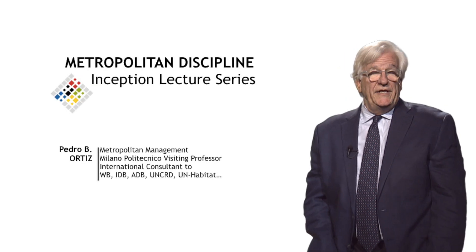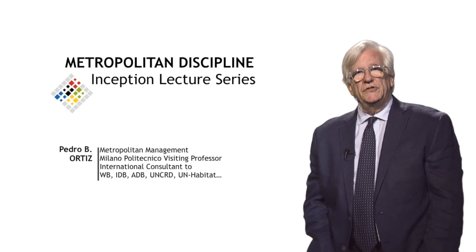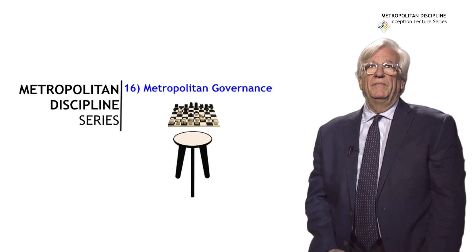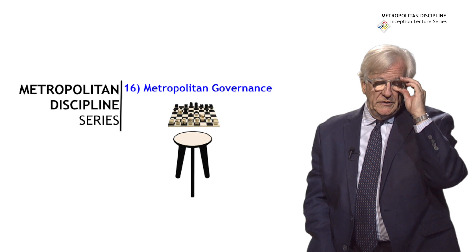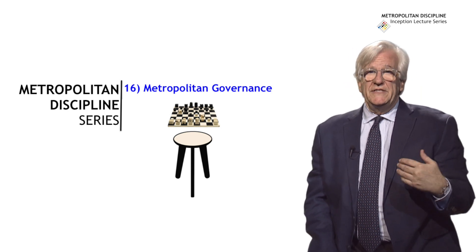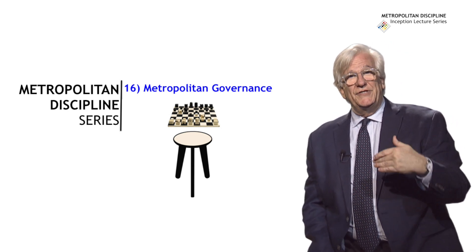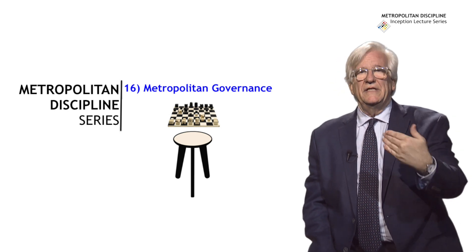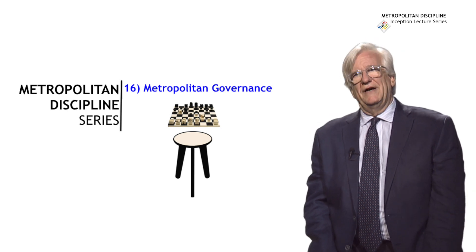Hello. Today in this series of lectures and presentations on the new metropolitan discipline, we are going to have a look at metropolitan governance. As we have mentioned in some of the previous ones, managing a metropolis is like playing chess on a three-leg stool. We are going to look at the three-leg stool, which is the strategic governance, and then the playing chess, which is the structural governance.